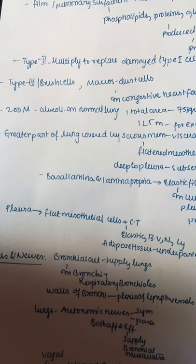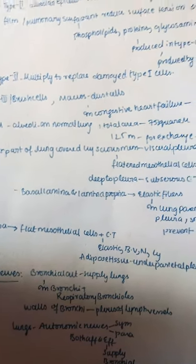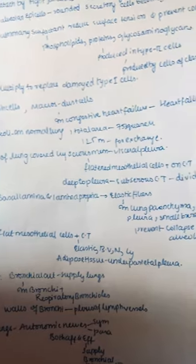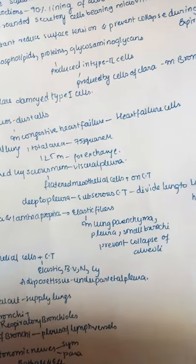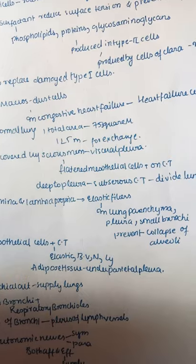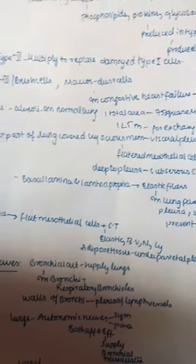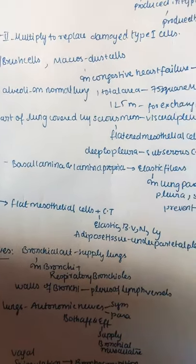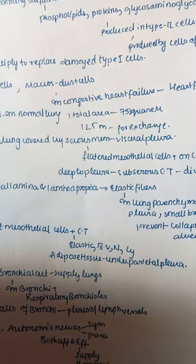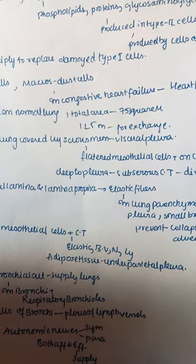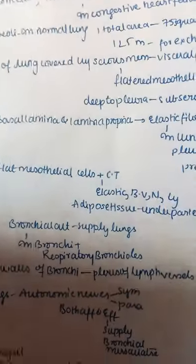Type 3 cells are also known as brush cells. Macrophages are called dust cells and are seen in congestive heart failure as heart failure cells, because they engulf red blood cells and appear red in color. In a normal lung, 200 million alveoli are present with a total area of about 75 square metres, and 125 square metres is available for gas exchange.